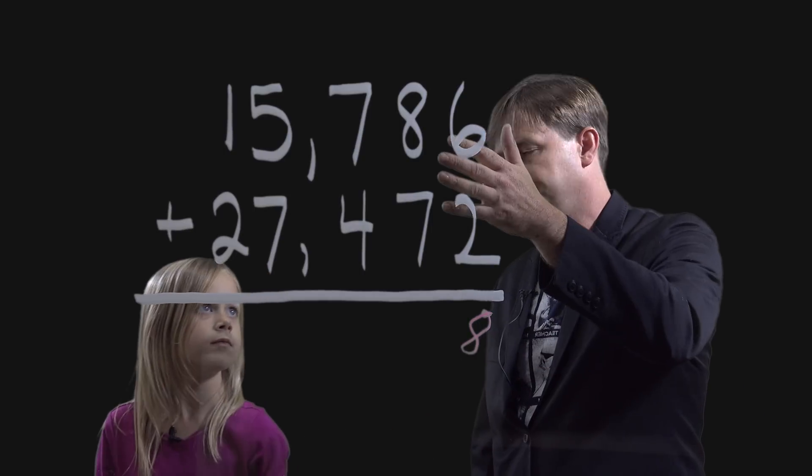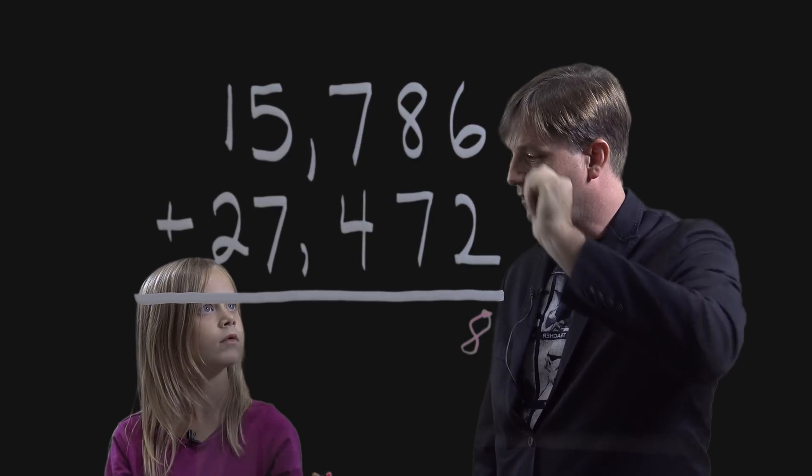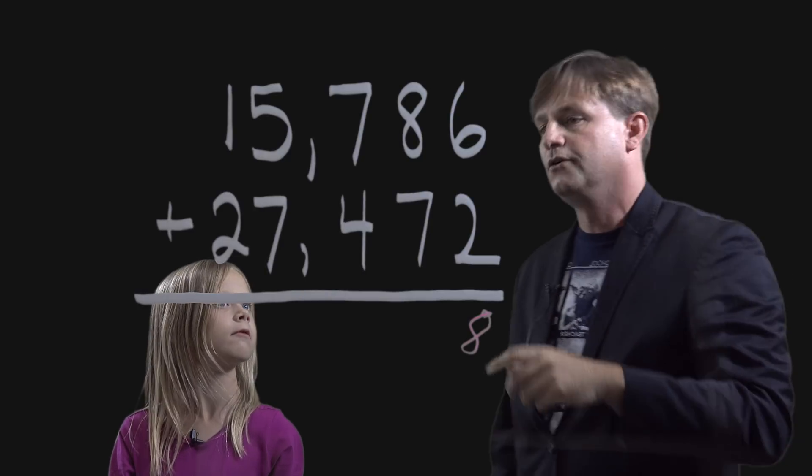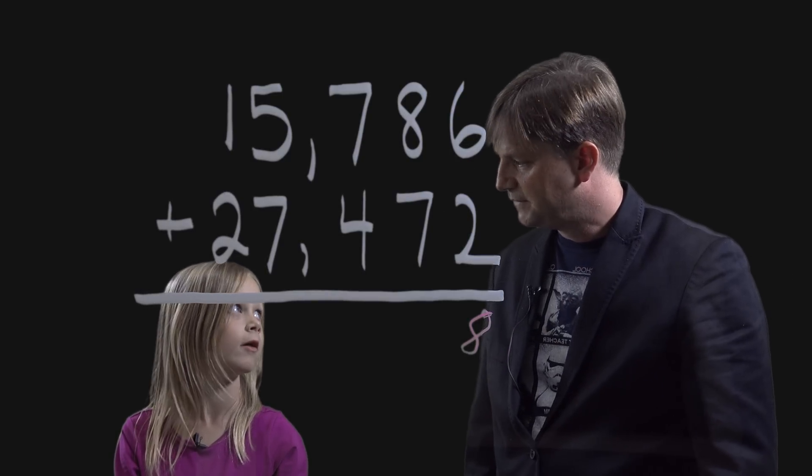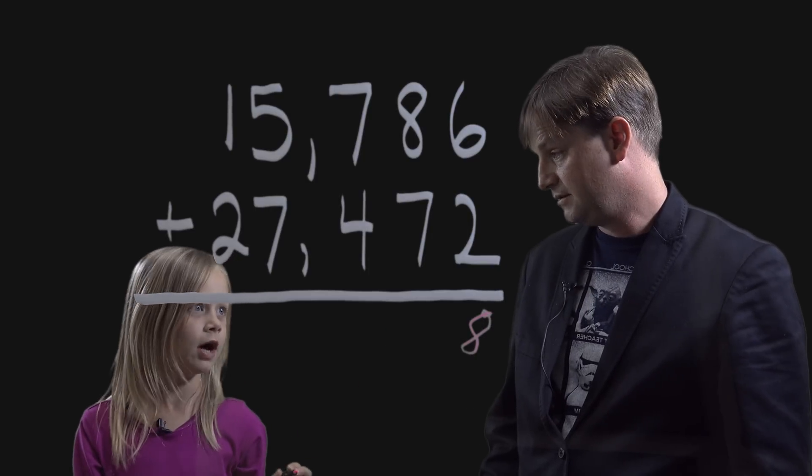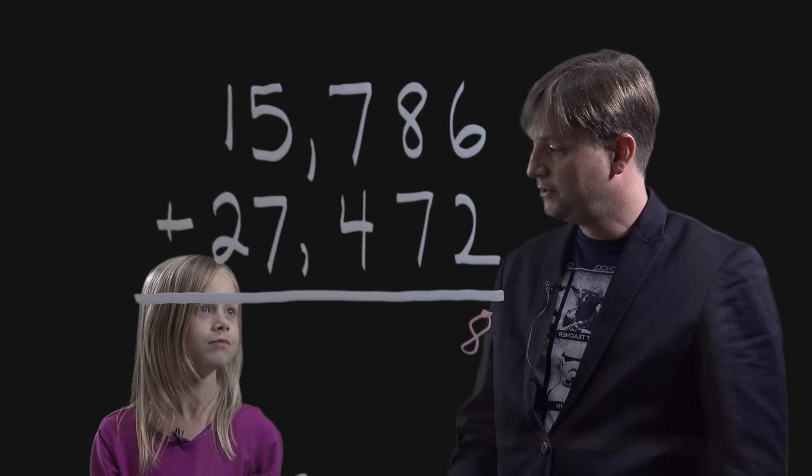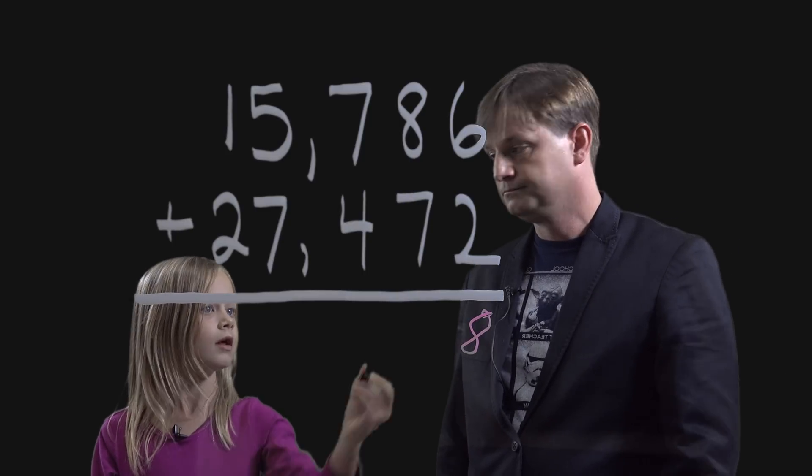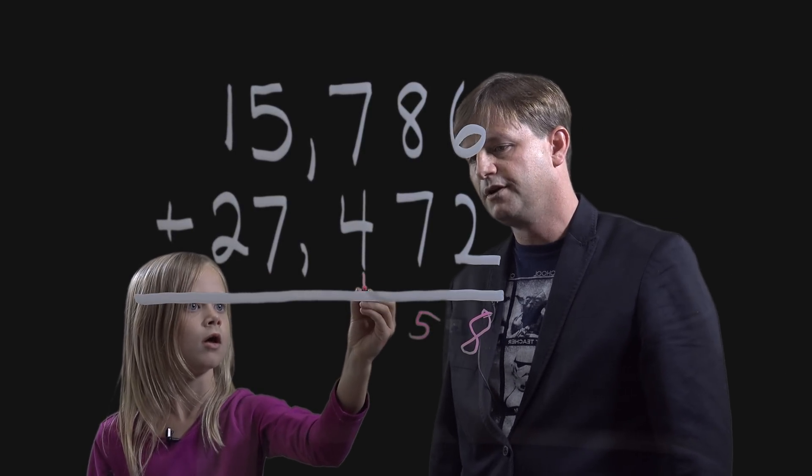Now, what's the next step? To add the tens. So, what's this eight stand for? Eight tens. Okay, so eight tens plus seven tens is? Fifteen tens. Fifteen tens, which is the same as? One hundred and fifty, or one hundred and five tens. Where's the five tens go? Right here. Five tens go there. Where's the one hundred go?